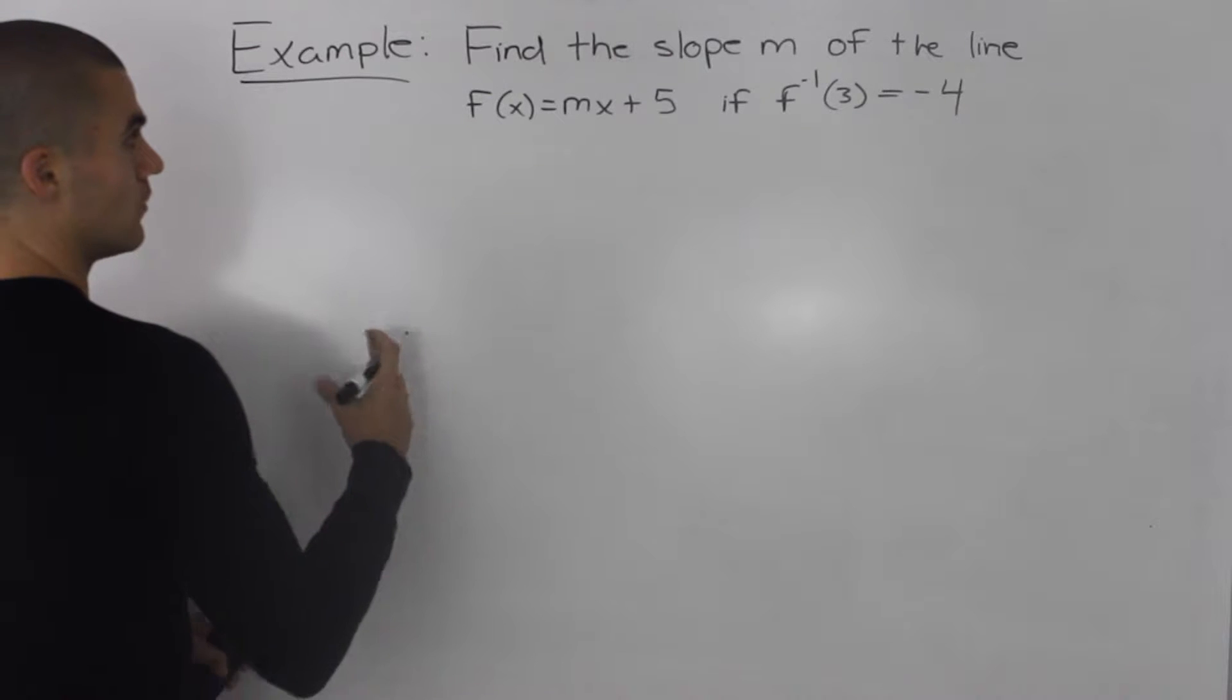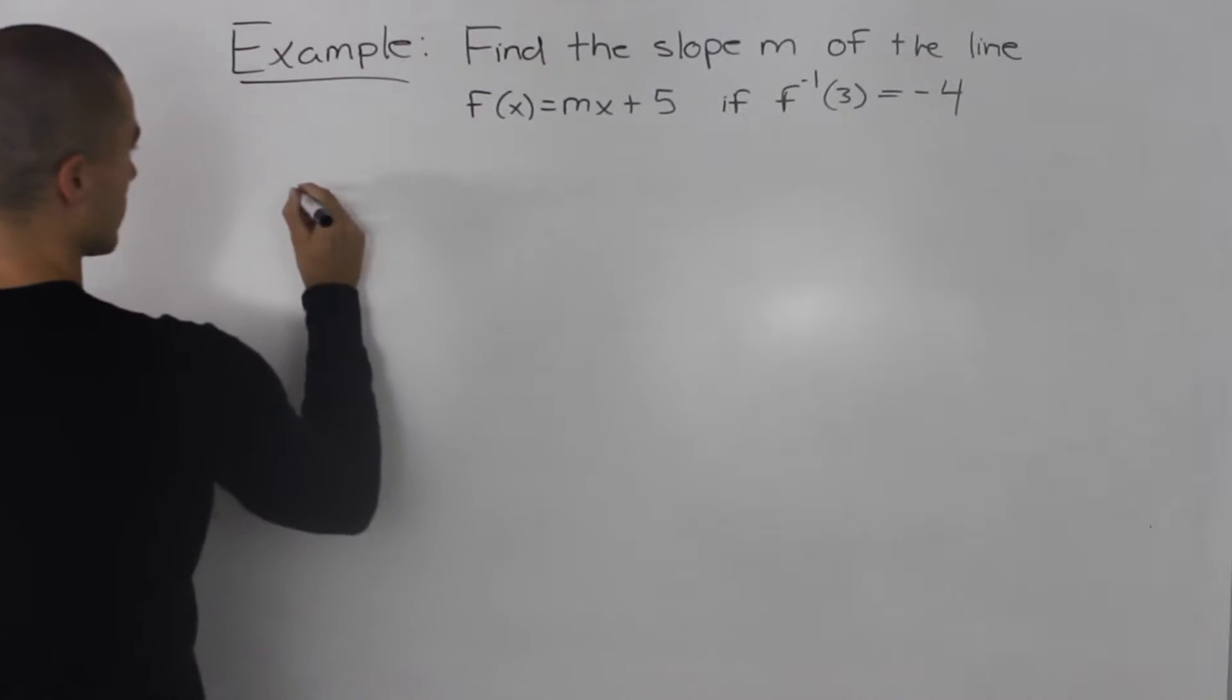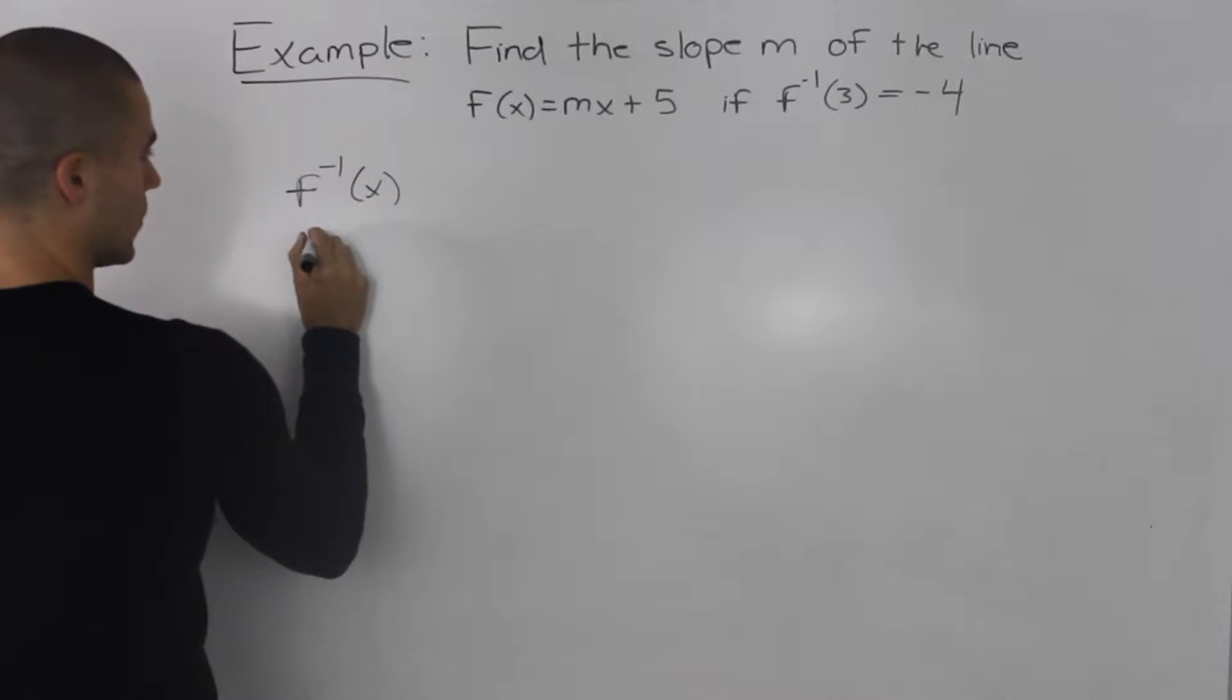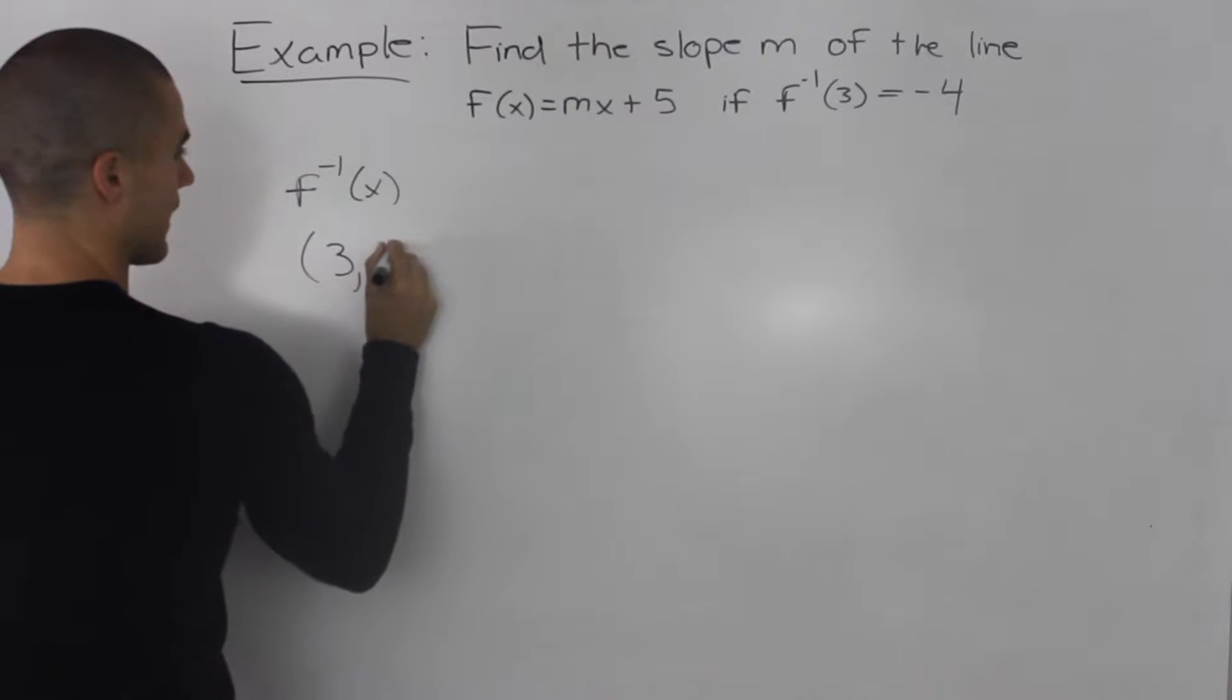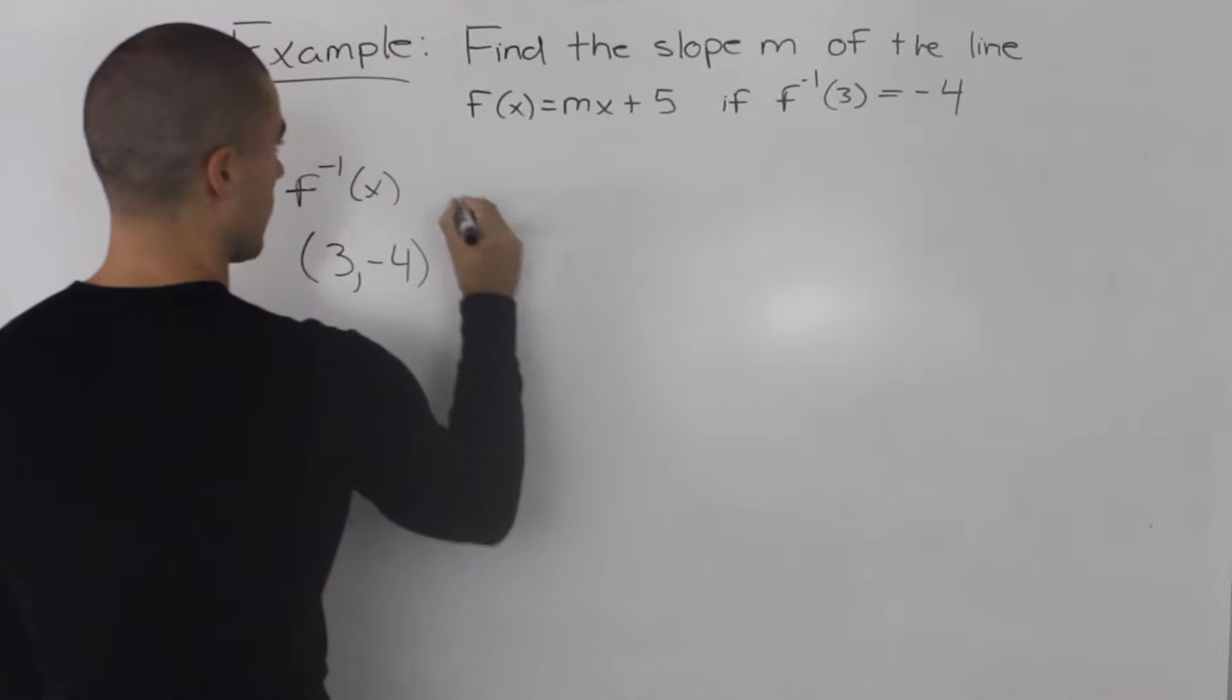So what kind of information are we given? Well, we're given that the inverse f inverse of x has a coordinate 3 and negative 4. The x value is 3, the y value is negative 4.